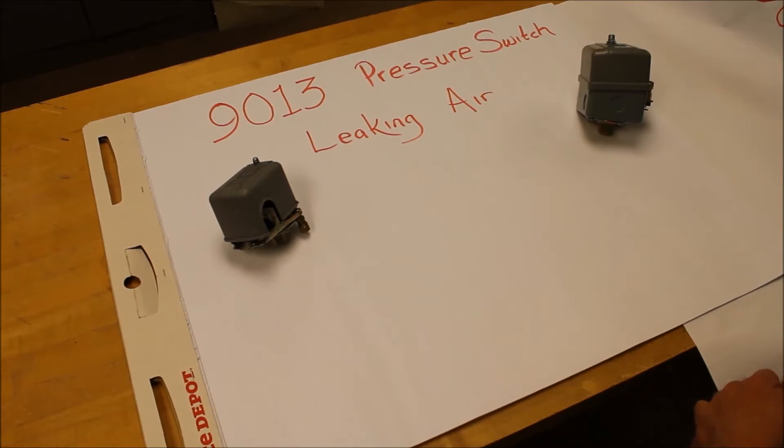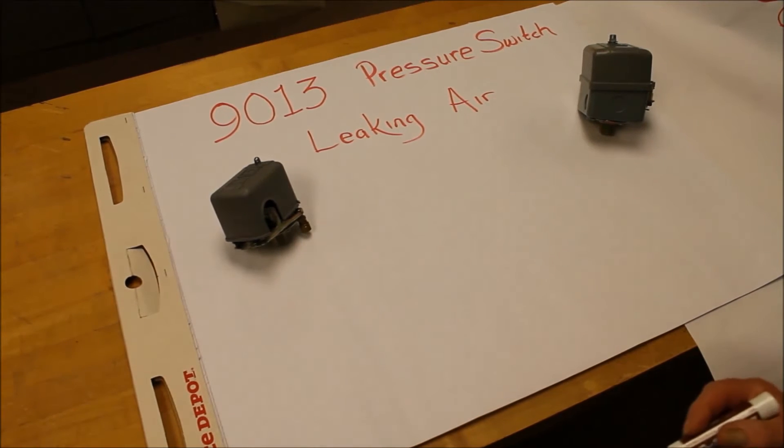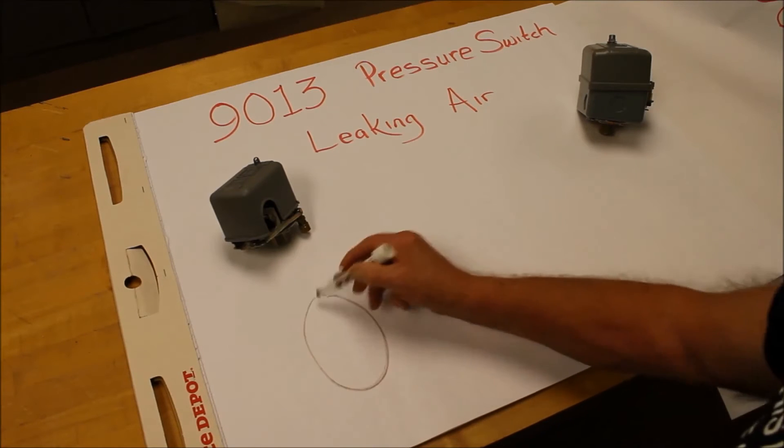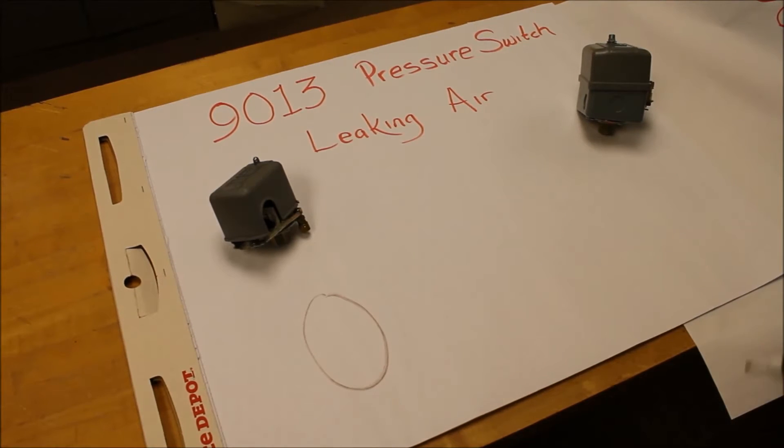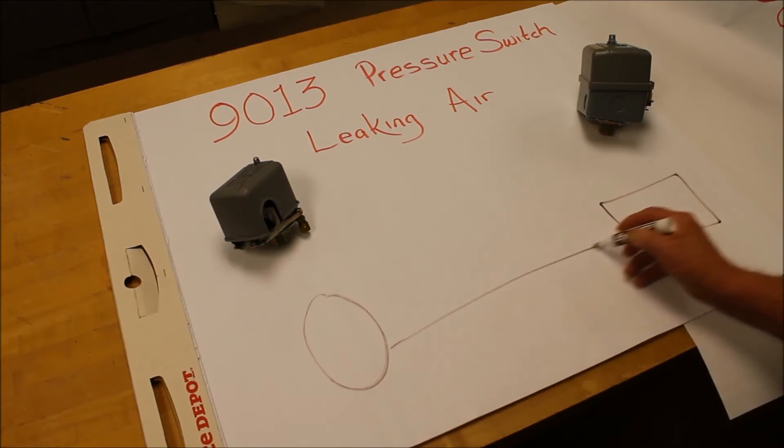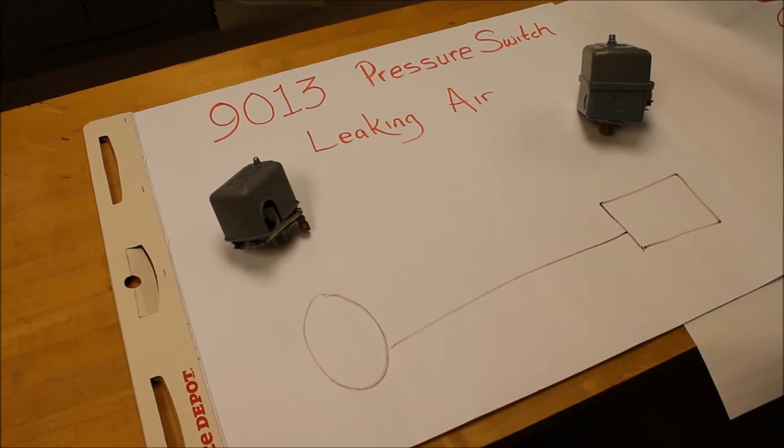The system basically consists of several components: a cylinder to store air, a compressor to start the system, and a pipe connecting the two together. This allows the system to function as a storage tank.